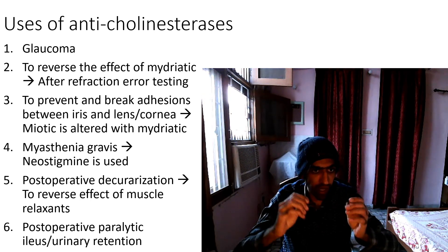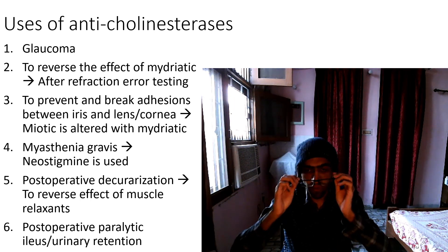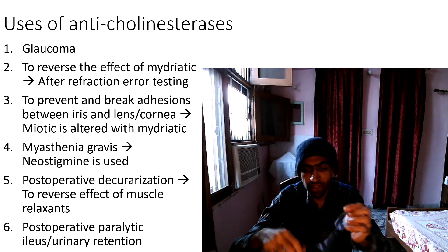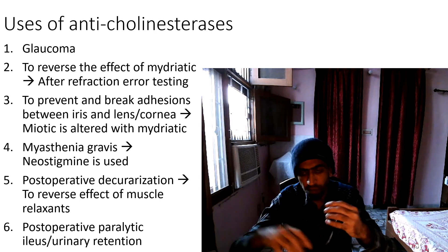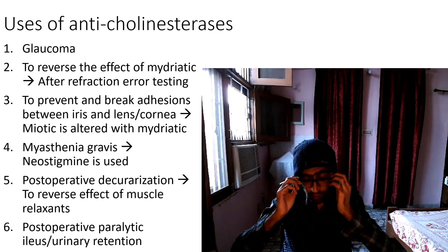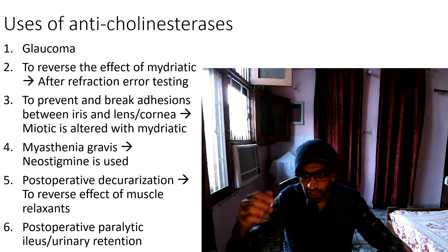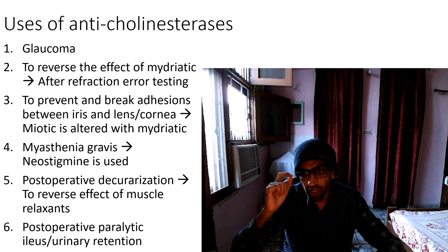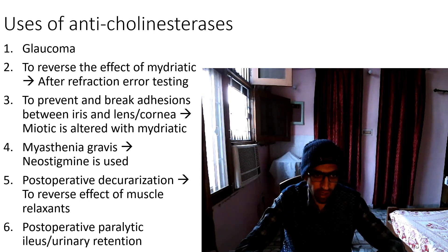When you go to an eye doctor for a refraction test, the doctor first dilates your pupil using a mydriatic so that fundoscopy can be performed — examining the back of the eye through the dilated pupil. Once the examination is complete, we give a miotic to bring the pupil back to its normal size.